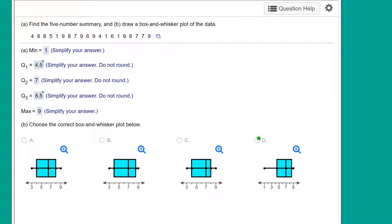Hi, this is Dr. Don. I have a problem out of Larson Chapter 2, Section 5, and you're given some data and you're asked to get the five-number summary and to draw a box and whisker plot.